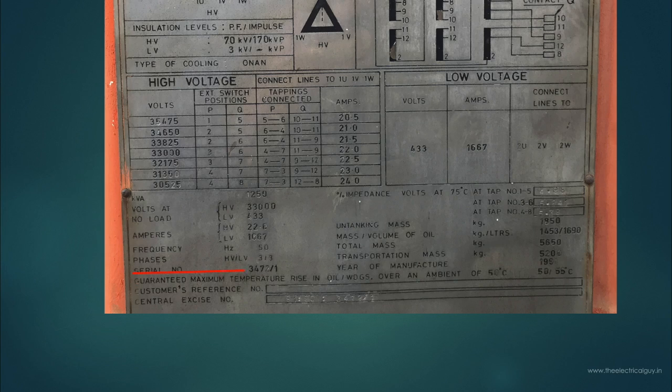Next thing is guaranteed maximum temperature rise in oil or windings over an ambient of 50 degrees. This indicates in case if the ambient temperature goes above 50 degrees then what will be the temperature rise in oil and windings. It is mentioned as 50 or 55 degrees Celsius. So the temperature rise will remain within 50 or 55 degrees Celsius even if the ambient temperature goes above 50 degrees.